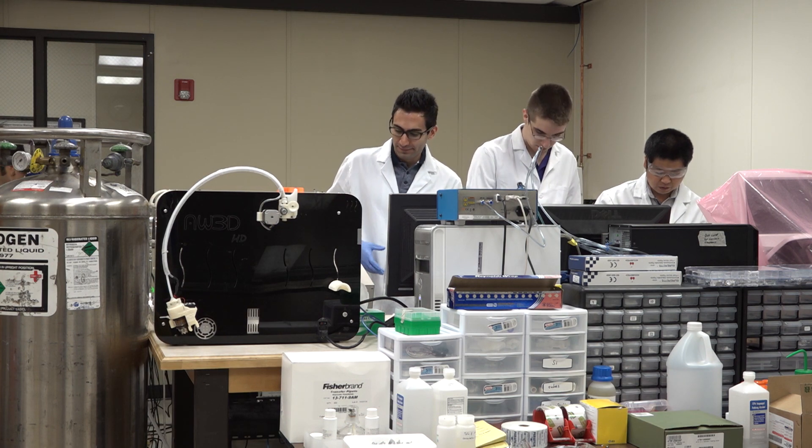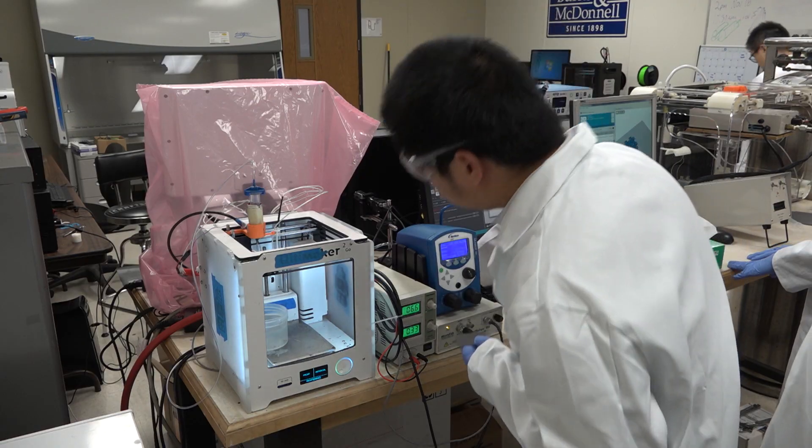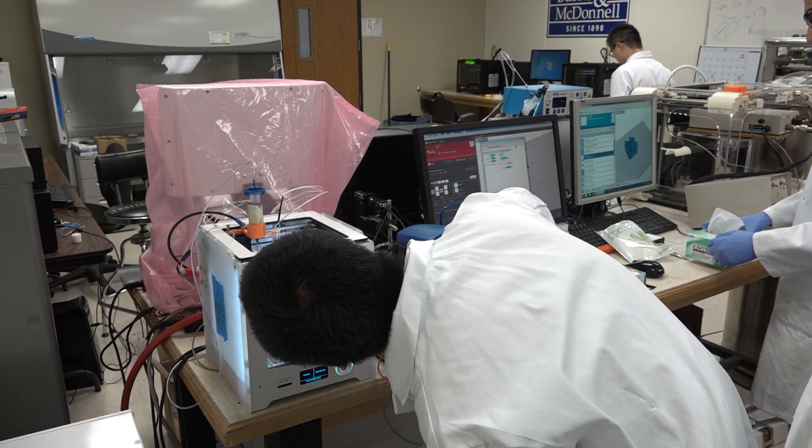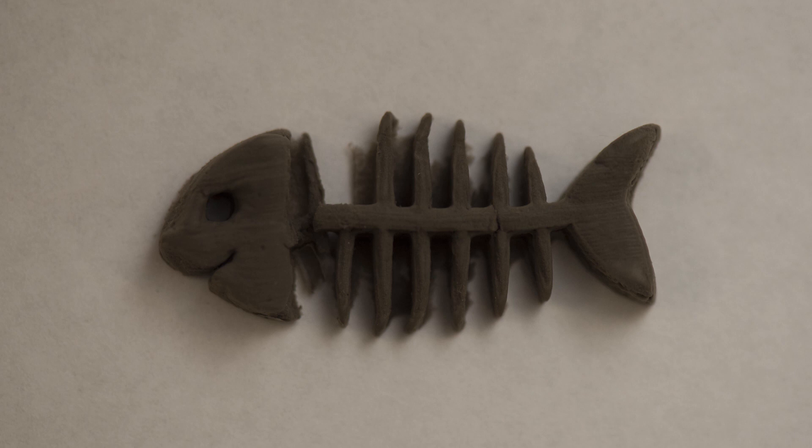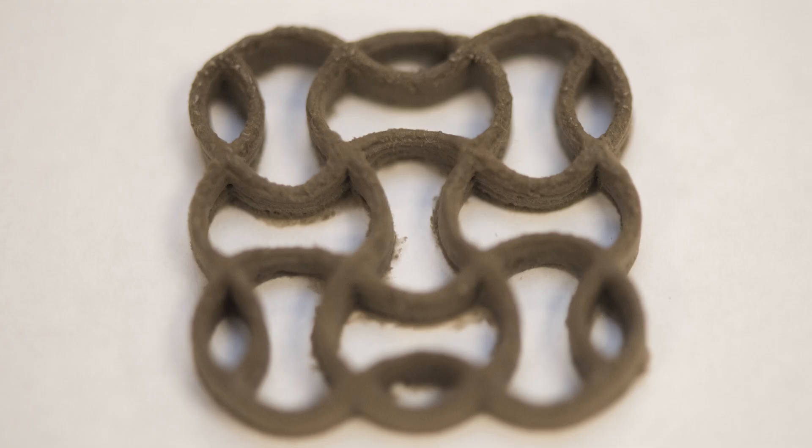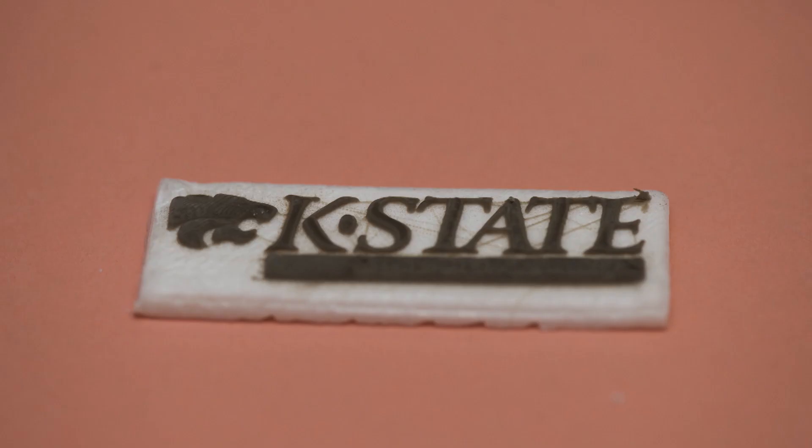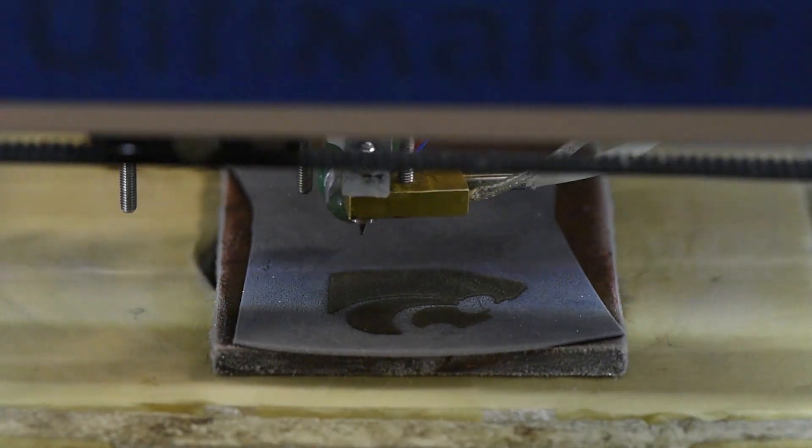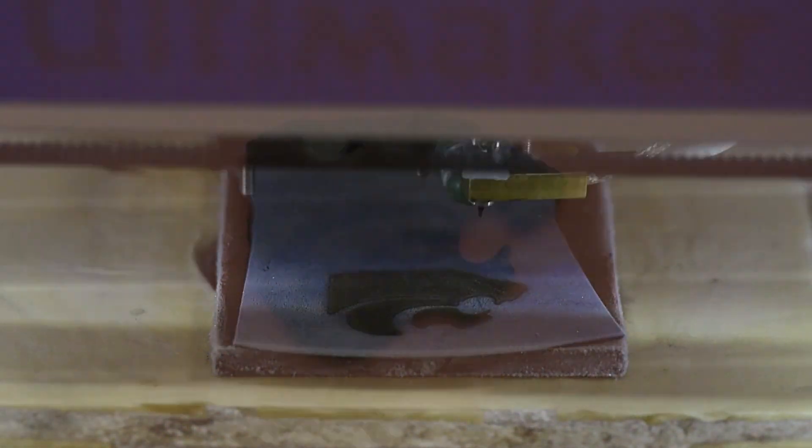Once we remove the ice, we have 3D printed graphene oxide structure. And then we use thermal reduction method to reduce the graphene oxide to graphene structures. Finally, we got a 3D graphene structure with ultra high compressibility and also very good electrical conductivity.